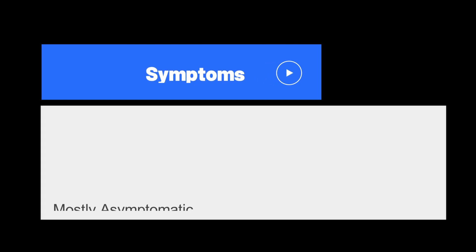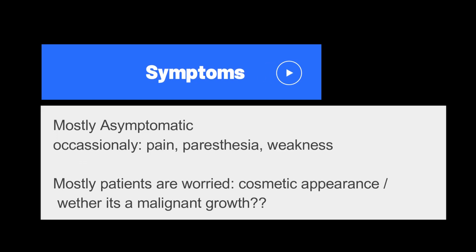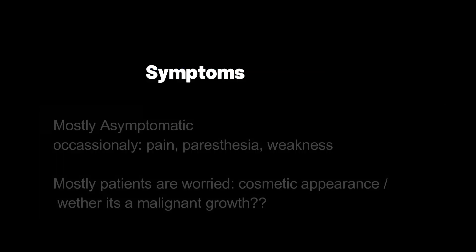Now let us look at the symptoms of a ganglion cyst. Most patients coming to the clinic will be asymptomatic. Very rarely a patient may present with pain, paresthesia, and weakness. Most patients are worried either about their cosmetic appearance or whether it is a malignant growth.